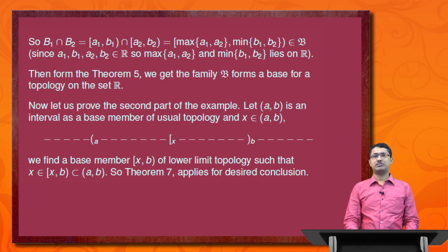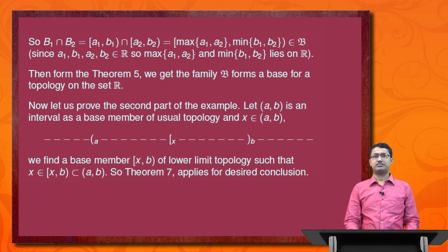Now we prove the second part: let (a, b) be an open interval as a base member of the usual topology and let x belong to (a, b). Then from the picture it is obvious that x lies between a and b. We get a base member [x, b) of the lower limit topology such that x belongs to [x, b) and [x, b) is a subset of the open interval (a, b). By Theorem 7, the desired conclusion follows: the lower limit topology is stronger than the usual topology.